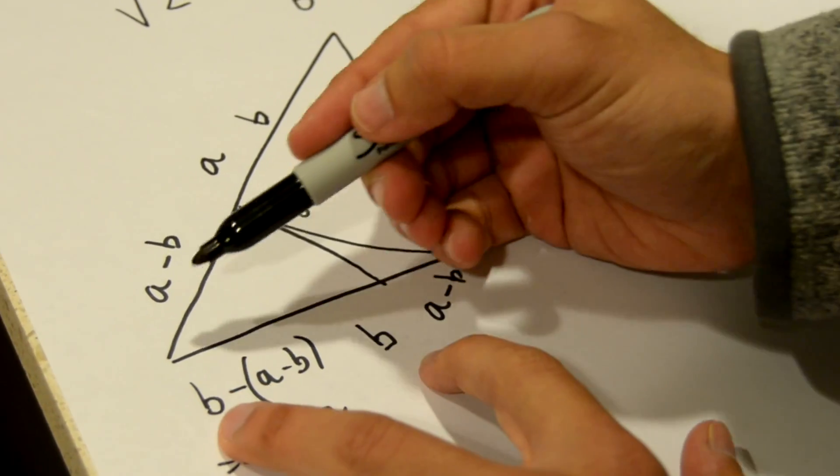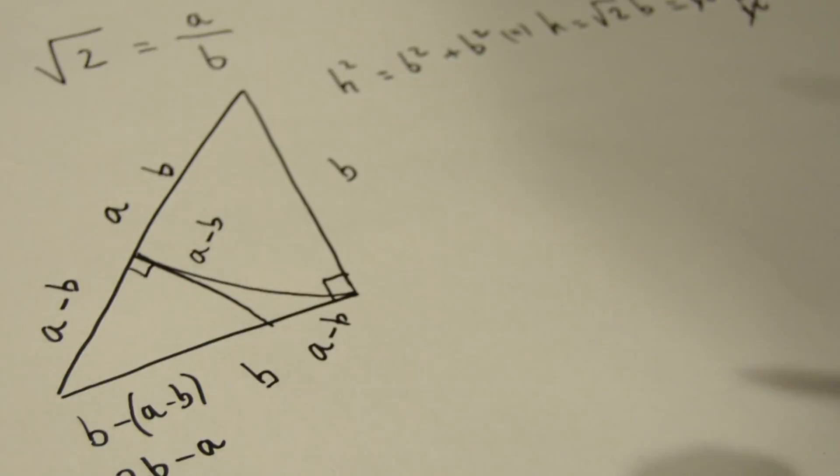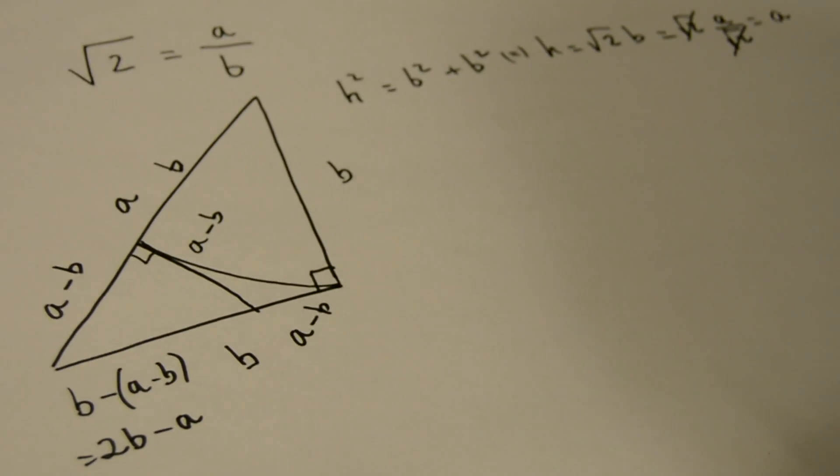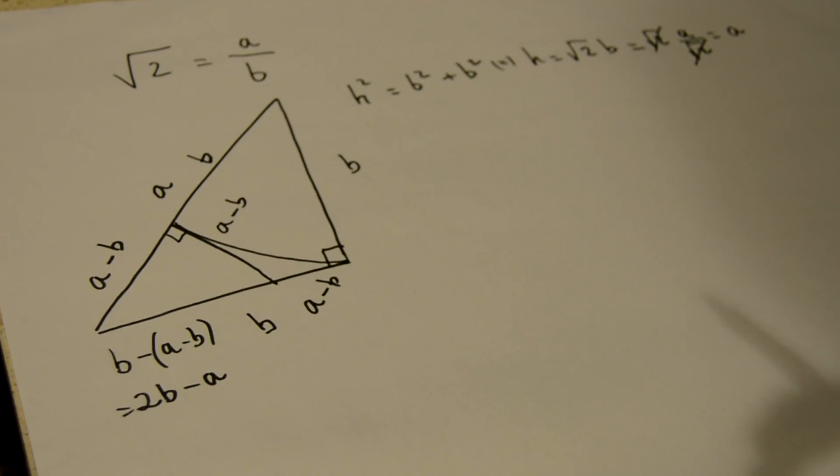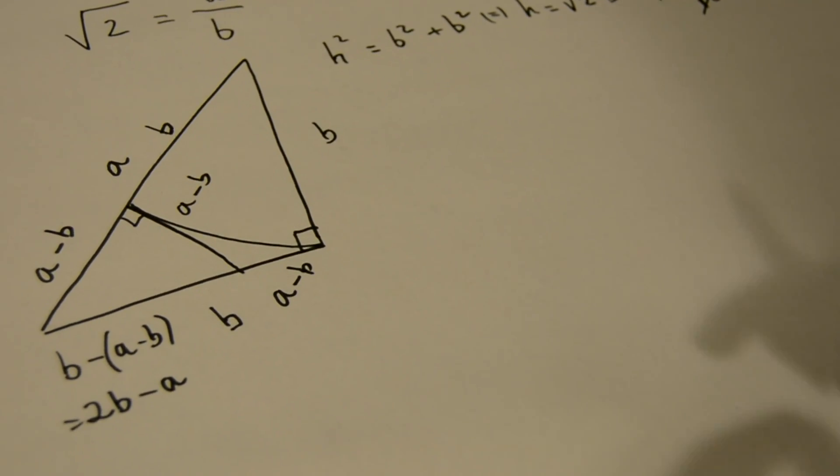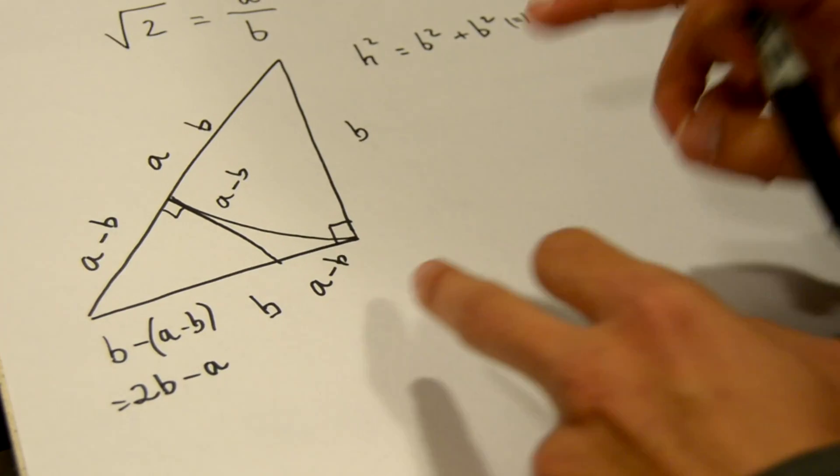This is the hypotenuse here. Now, if we use the triangle similarity property, which tells us that the ratios of the hypotenuse to the side must be equal for these two triangles, the smaller and the bigger,